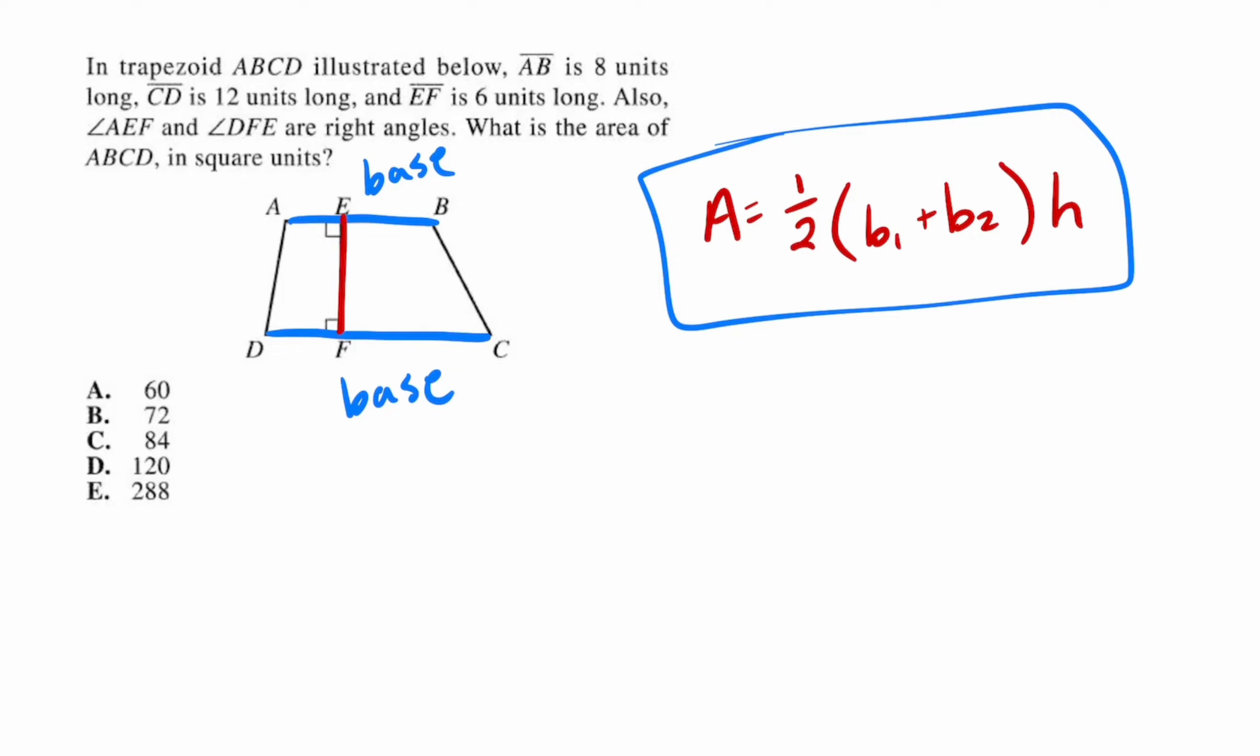Okay, so the information we need is the bases and the height. In this problem, all of that information was given. It tells us AB is 8 units, CD is 12 units, and EF is 6 units.